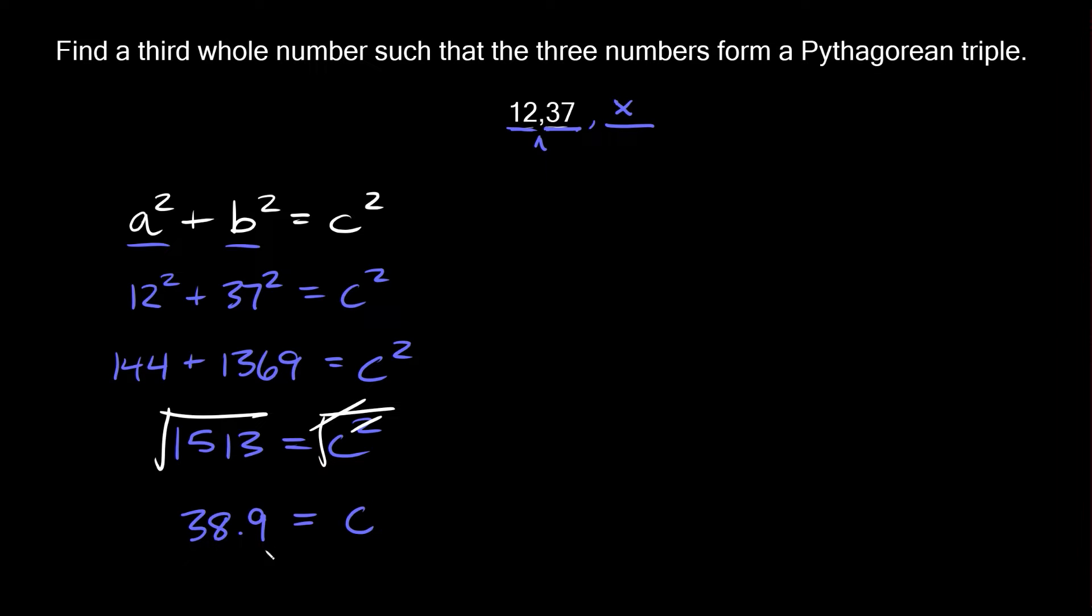Here we've run into an issue because we were looking for a whole number but we got a decimal. Remember the problem said find a third whole number so that these three numbers form a Pythagorean triple.